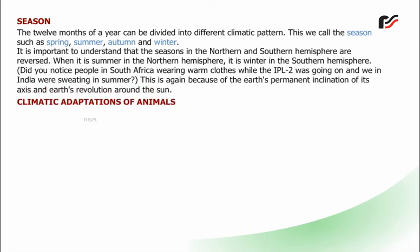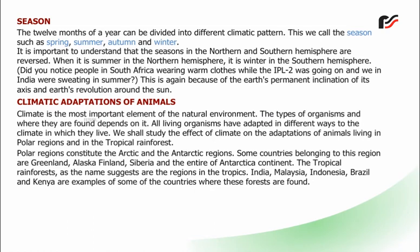Climate is the most important element of the natural environment. The types of organisms and where they are found depends on it. All living organisms have adapted in different ways to the climate in which they live. We shall study the effect of climate on the adaptation of animals living in polar regions and in the tropical rainforest. Polar regions constitute the Arctic and Antarctic regions. Some countries belonging to this region are Greenland, Alaska, Finland, Siberia, and the entire Antarctic continent.